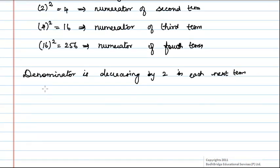Here, the first term denominator is 19 minus 2 and it is equal to 17. It is the denominator of second term.